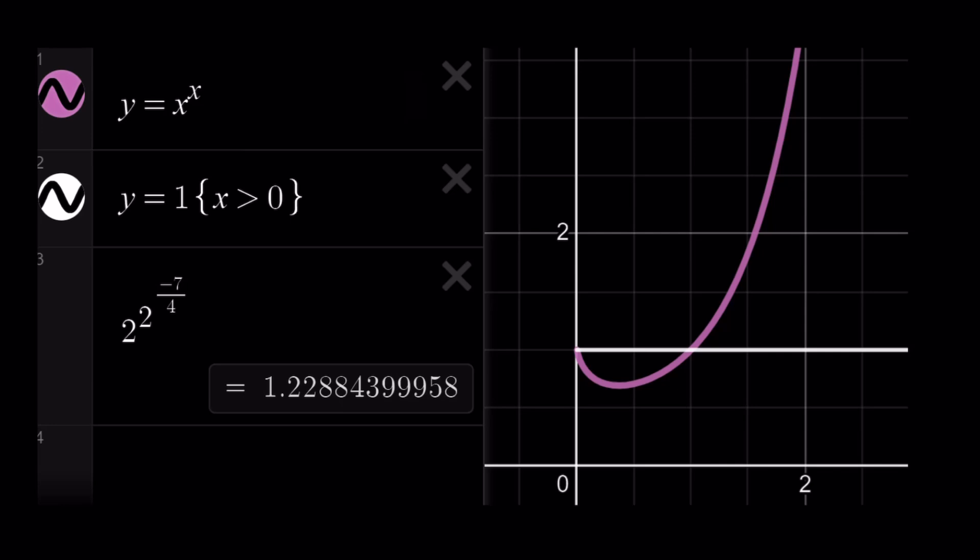So it does have a minimum actually, I'm sorry, that's incorrect. It wasn't 0 to 1. It's actually another value that you can find by differentiating and I think that should be 1 over e. Anyways, so it does decrease and then increase.